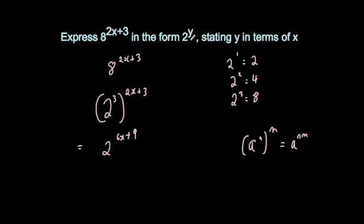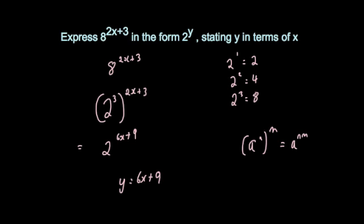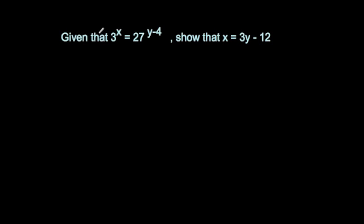The question says put it in the form 2 to the power of y, stating y in terms of x. If this is 2 to the power of y, then y equals 6x plus 9. The key with a question like this is to look at the base number you're trying to reach and change the base accordingly — here we changed 8 to 2 cubed.